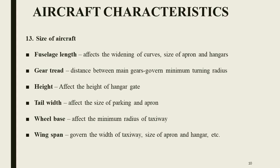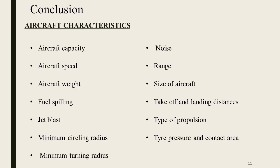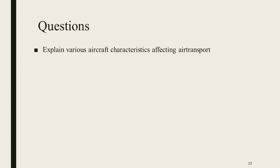So these are the main important aircraft characteristics that affect airport planning. In this short lecture we have studied various aircraft characteristics and their influence on airport planning — mainly aircraft capacity, speed, weight, fuel spilling, jet blast, minimum circling radius, turning radius, noise, range, size of aircraft, takeoff and landing distance, type of propulsion, tire pressure and contact area. Description of aircraft characteristics is an important question for the university examination, so please study.